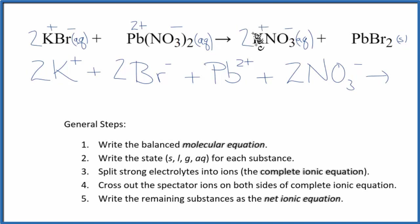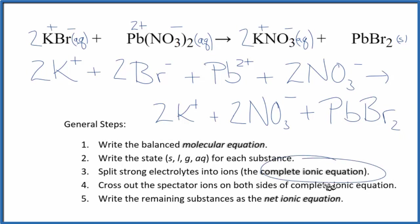For the products, we have two potassium ions again, plus two nitrate ions. And for the solid, with net ionic equations, we don't split solids apart. So this lead 2 bromide just stays as PbBr2. This is the complete ionic equation.